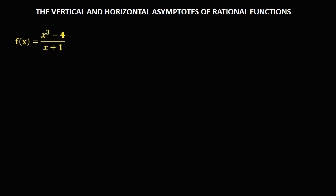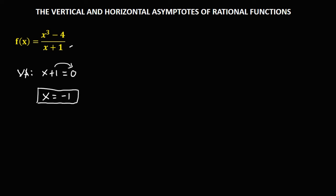For this given, to solve for the vertical asymptote, equate the denominator to zero. Transpose the positive 1, so x is equal to negative 1. This is the vertical asymptote.